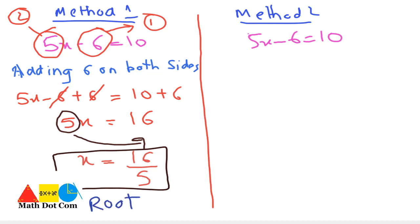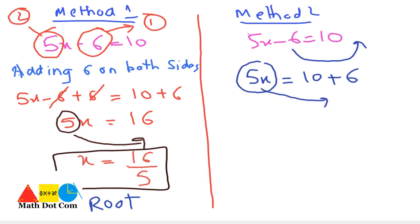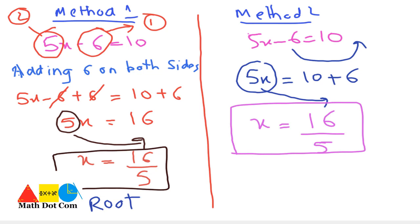By Method 2, we move the minus 6 to the other side, inverting the sign: 5x equals 10 plus 6. Whatever is multiplied in the numerator on the left hand side goes to the denominator on the right hand side, and vice versa. So x equals 16 over 5. Method 2 is easier and quicker for solving a linear equation, and so it is the preferable method. This is the root of the equation.